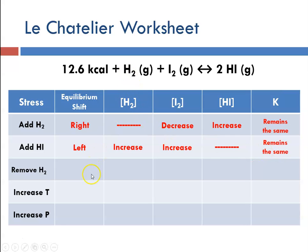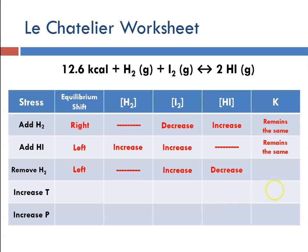If we remove one of the reactants — in this case hydrogen — it will shift to the left to reform it. That means we can expect an increase in iodine concentration and a decrease in hydrogen iodide. Concentration changes do not change the value of Keq.